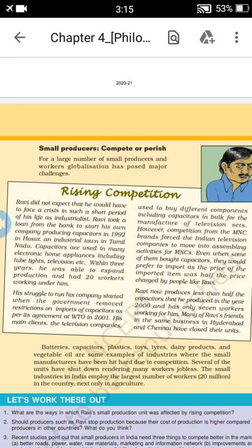A small example is given in your textbook about a person named Ravi. He is not an expert and had a small period in his life as an industrialist. He took a loan from the bank to start his own company, which produced capacitors, in the year 1992. His industrial field was in a town in Tamil Nadu, that is Hosur.